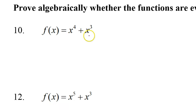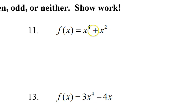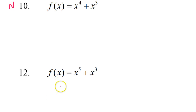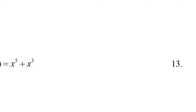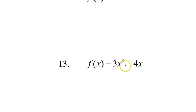Looking at number 10, I see an even and an odd exponent — that's a mixture, so this is going to be neither. Looking at number 11, I see exponents 4 and 2 — those are both even, so this is going to be even. Looking at number 12, exponents 5 and 3 — these are both odd, so that's going to be odd. Looking at number 13, I see a power of 4, and plain x is like x to the 1 power, so that's even and odd — a mixture, so this is going to be neither.